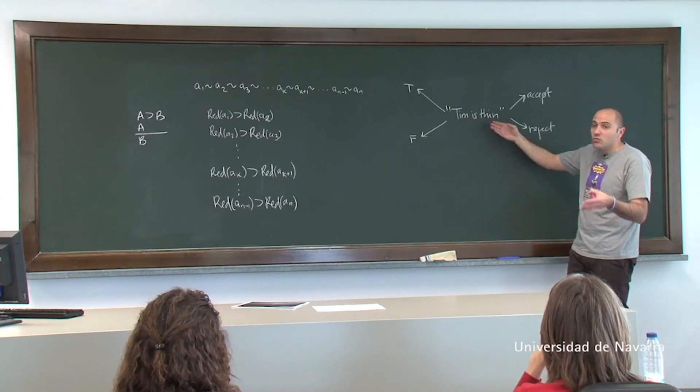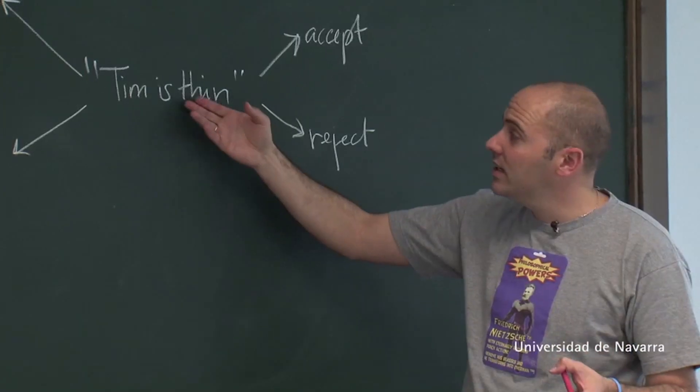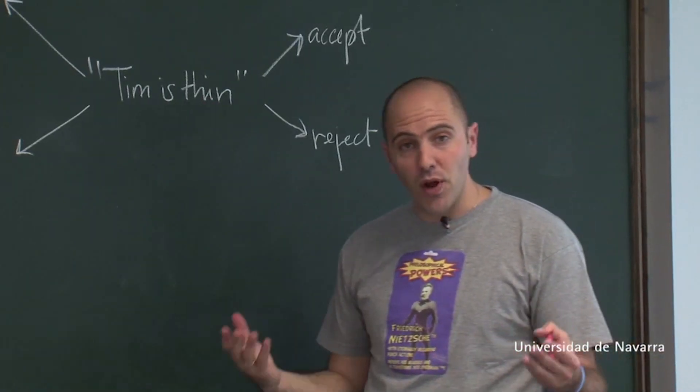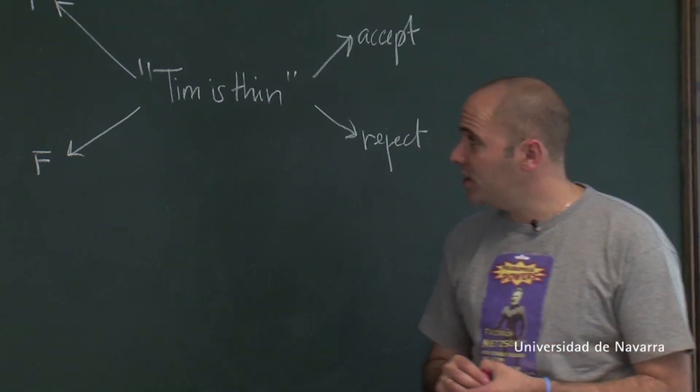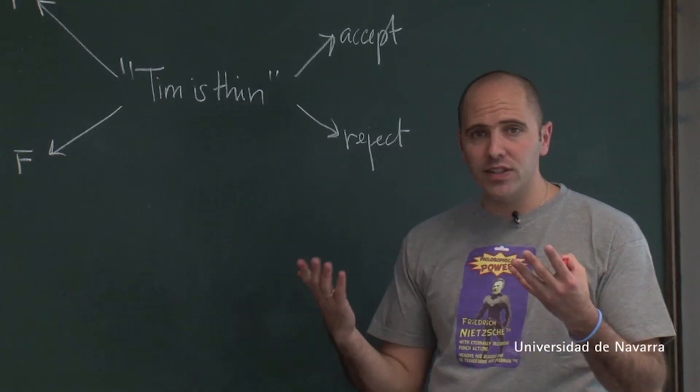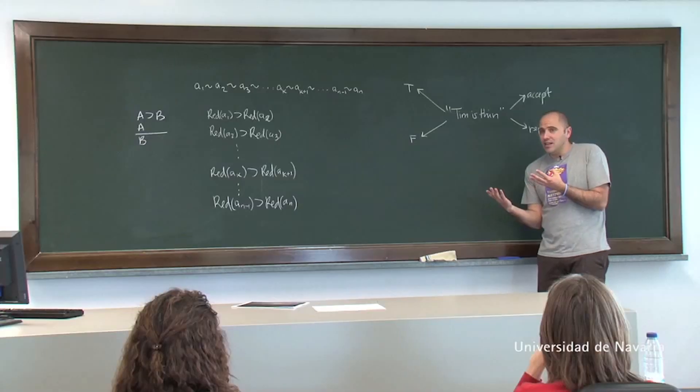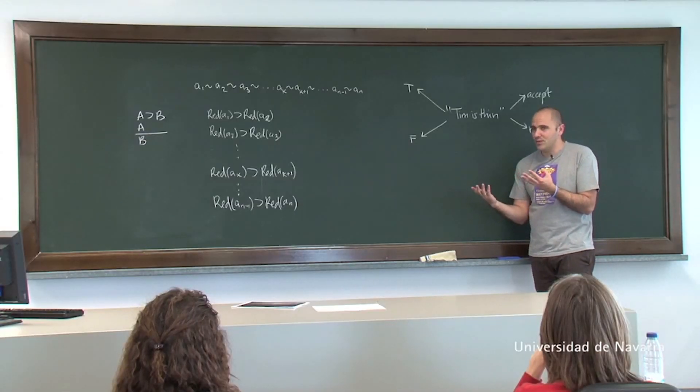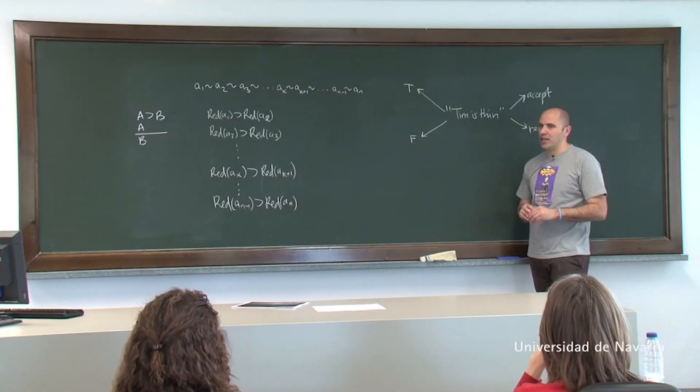We might know all the relevant facts about Tim's measures, we might know everything we should know seemingly about the meaning of the predicate because we are competent speakers, but still it is somehow unclear whether Tim is thin, because Tim lies somehow on the border. So that's intuitively a borderline case.